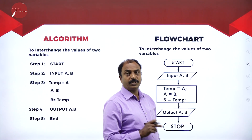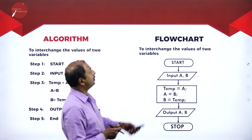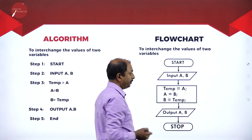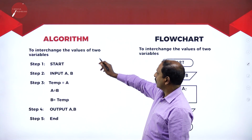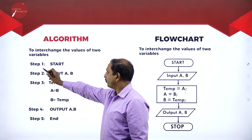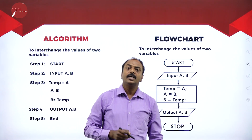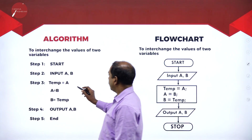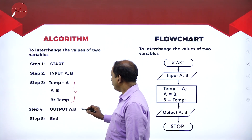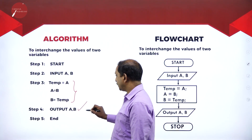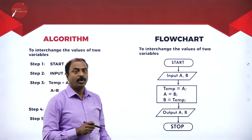Now, having looked at the different shapes, let us write a flowchart as an example. This is the flowchart to interchange the values of two variables. We can also see the algorithm for the same. Algorithm step 1: start, input a and b. We have to interchange the values of two variables, so we enter two numbers. Then we find and print the result, and finally end.